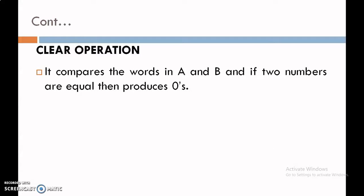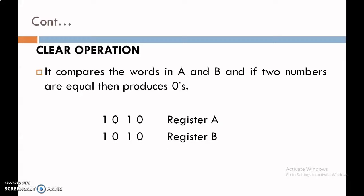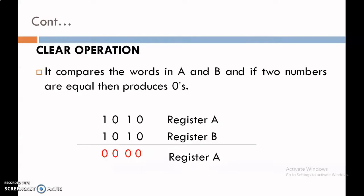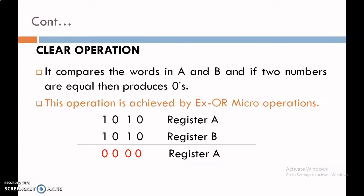The next application is clear operation. Clear operation compares the bits in register A and B, and if two numbers are equal, it produces 0s. For example, register A contains 1010 and register B contains 1010. Here it compares both bits of register A and B, putting 0 if both bits are equal. Since all corresponding bits are equal, the result is 0000. Clear operation is achieved by performing the XOR micro operation.